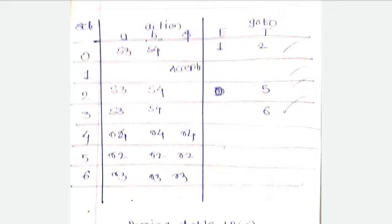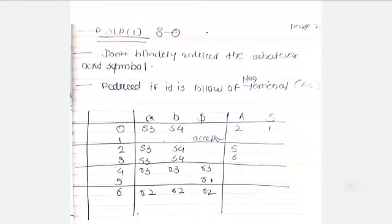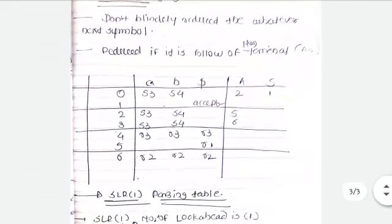Now what is different between LR0 and SLR1? SLR1 says that don't blindly reduce the whatever next symbol. If next symbol is non-terminal then create the follow of that non-terminal, then add into the reduction or final state. Reduce if it is a follow of non-terminal.